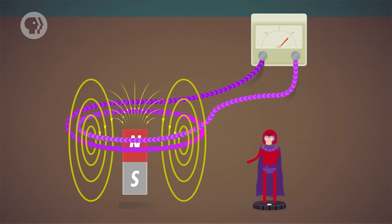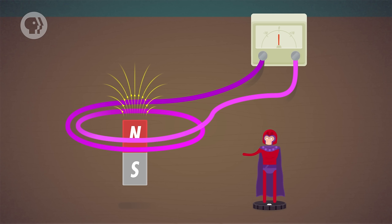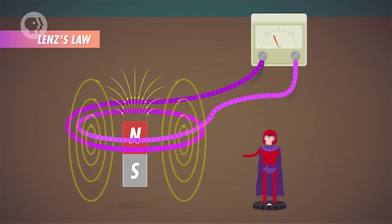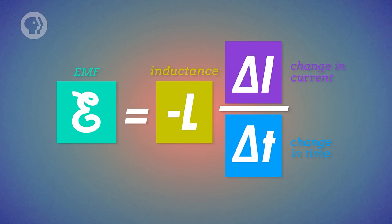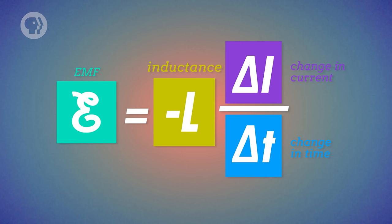Now that we have RMS values to better describe current and voltage in AC circuits, let's think about how we can use the unique nature of AC circuits to our advantage. With coils of wire, when the current is changing, a magnetic flux is induced in the coil, and that flux seeks to oppose the current with an electromotive force, or EMF, in the opposite direction — this is Lenz's law. This relationship works the opposite way as well, with a changing magnetic flux inducing an EMF that opposes the flux. So in an AC circuit, you end up with a changing current that induces an opposing magnetic flux, which in turn induces an EMF in the opposite direction of the current. This induction of an EMF that opposes the main current is called self-inductance. To calculate an induced EMF, you take the change in current over time and multiply it by negative L, where L is the inductance — negative because the induced EMF is in the opposite direction of the main current.